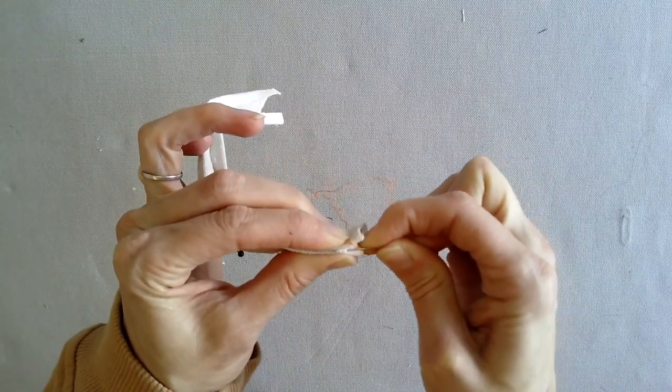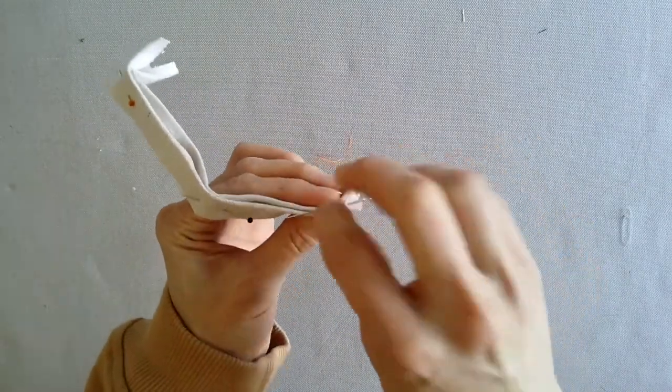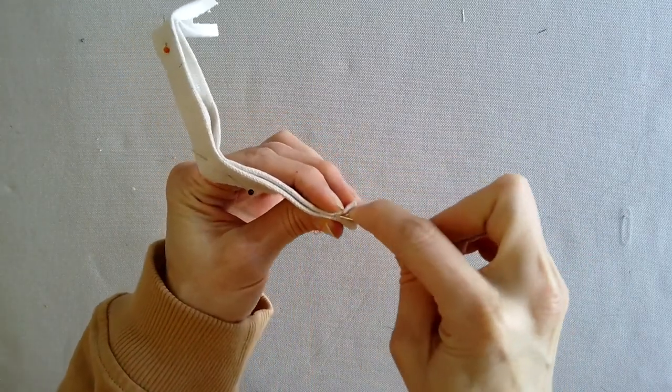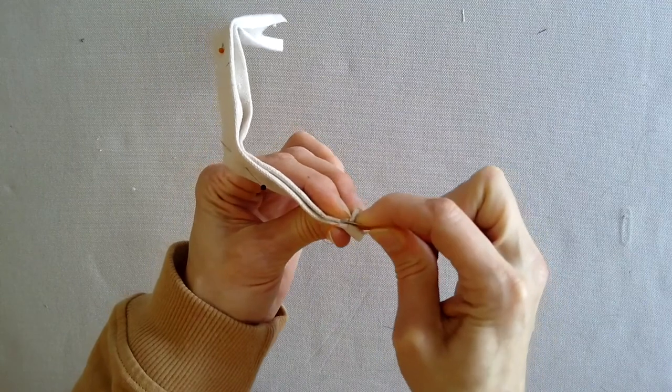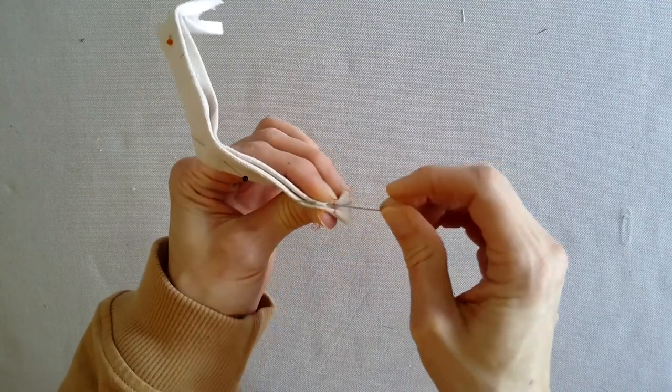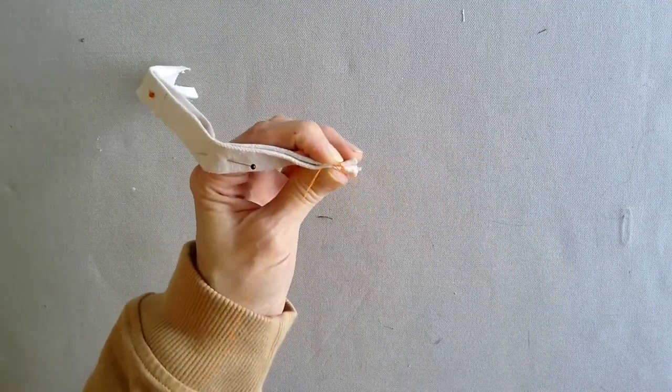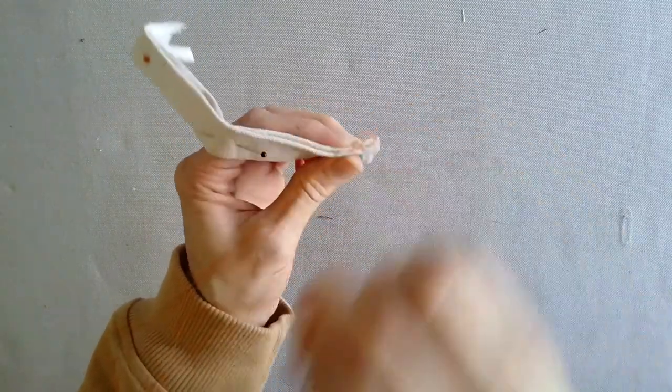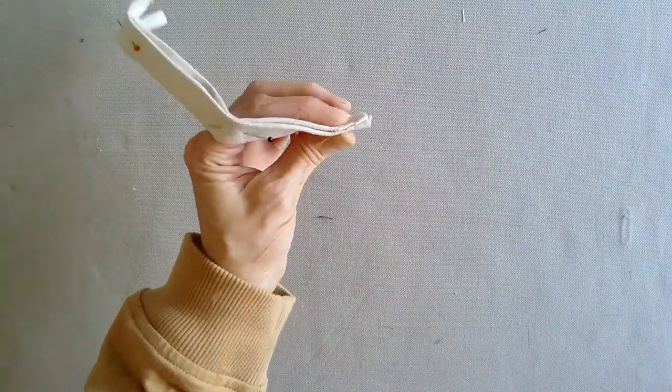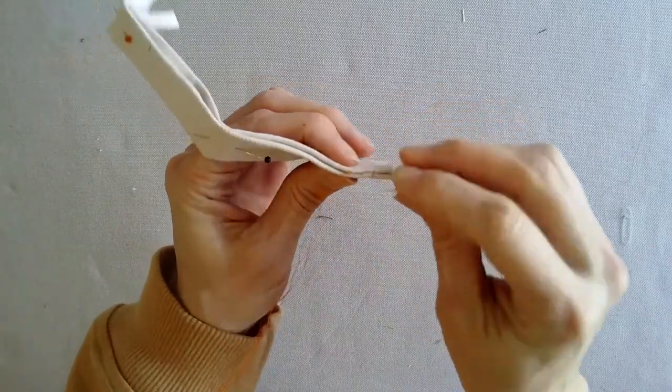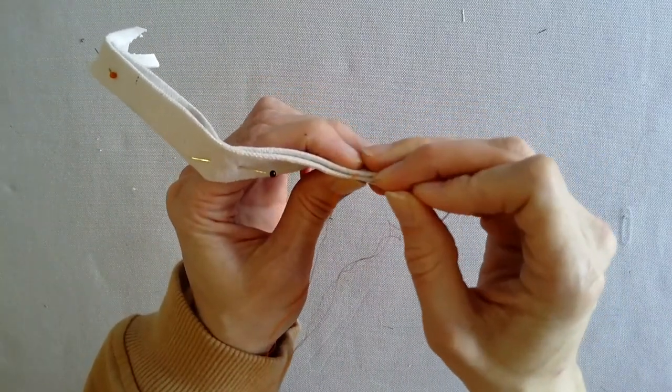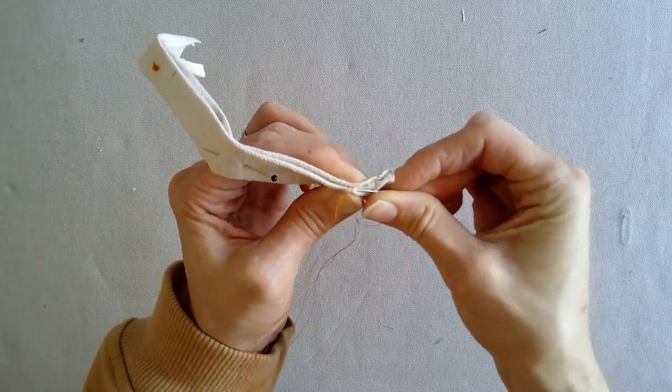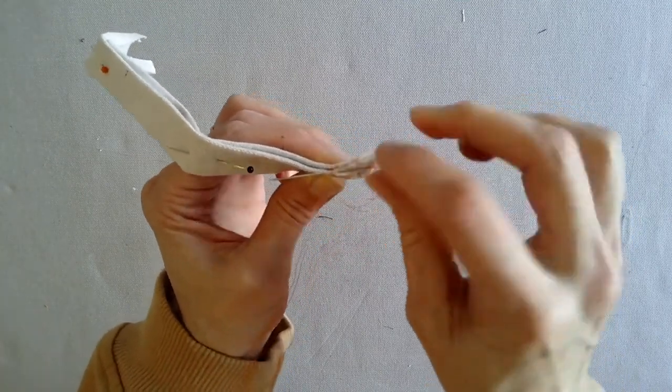Blind stitch the entire seam closed. Stitching from right to left into the bottom seam, up to the top seam, right to left, out of the fabric, down into the bottom seam. Continue this pattern all the way across the seam.